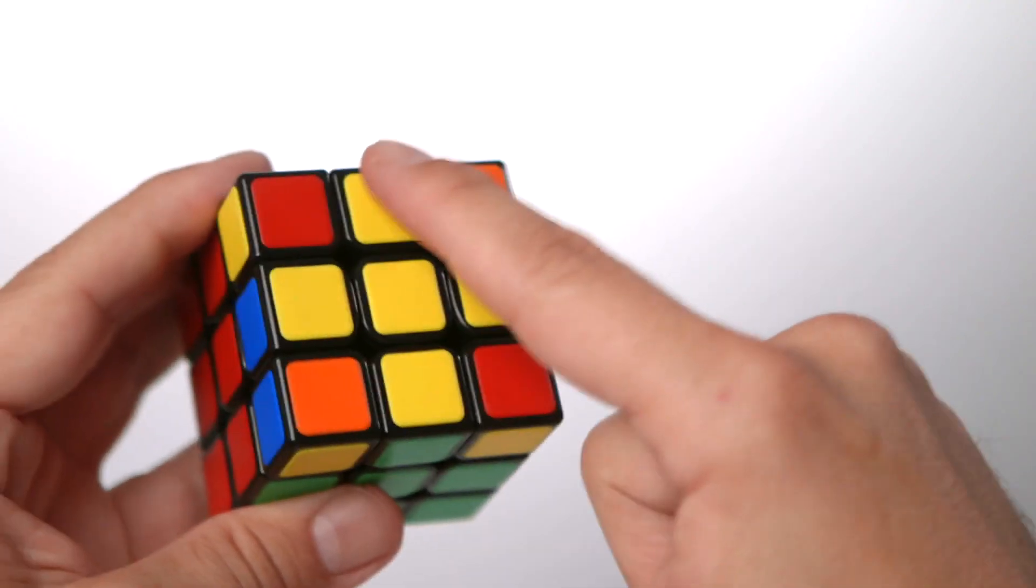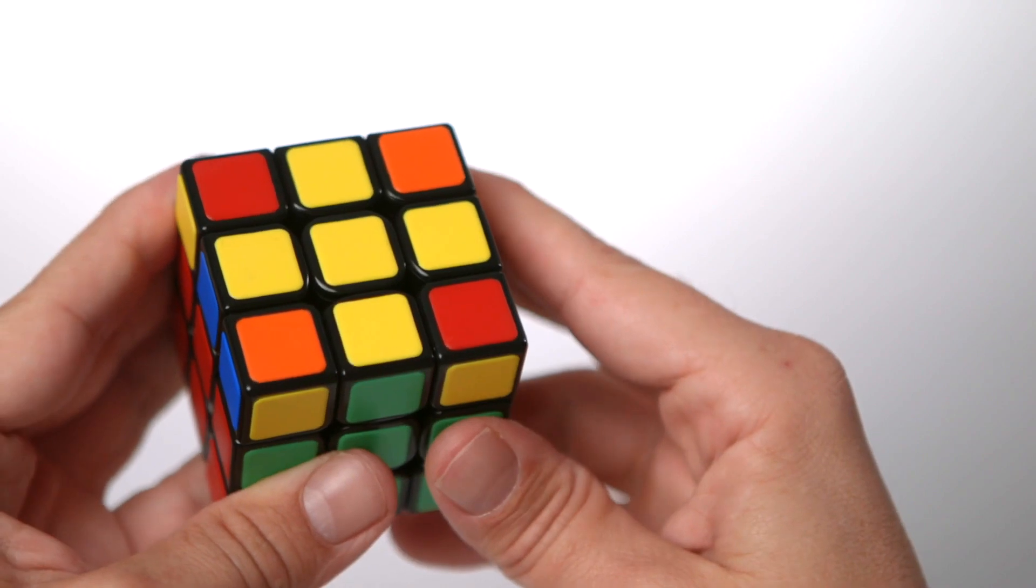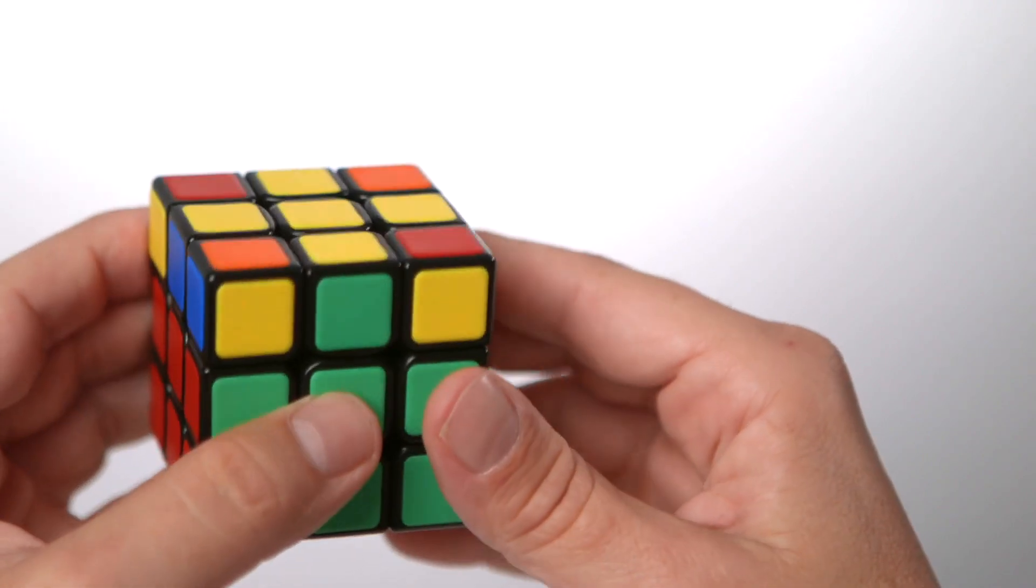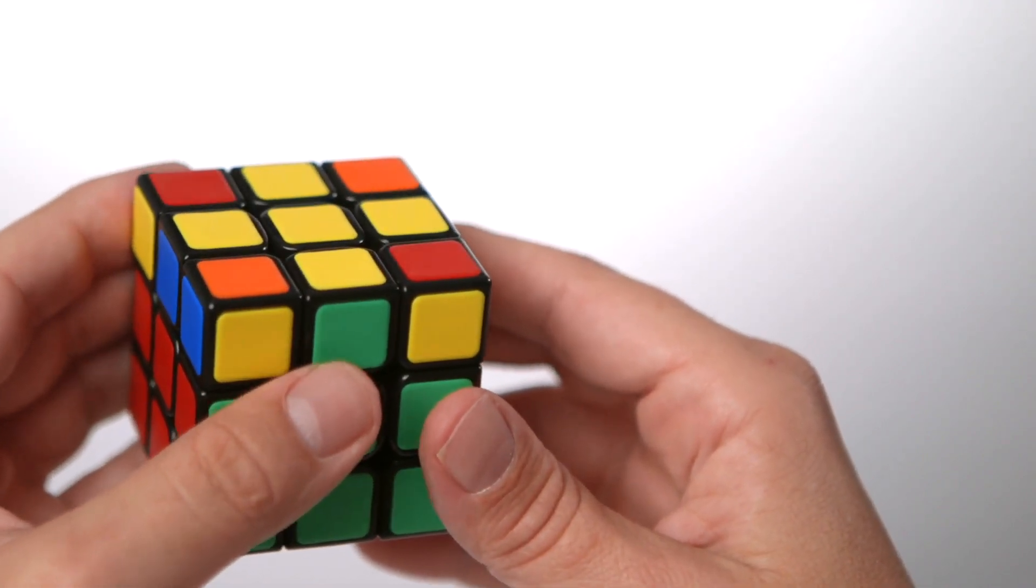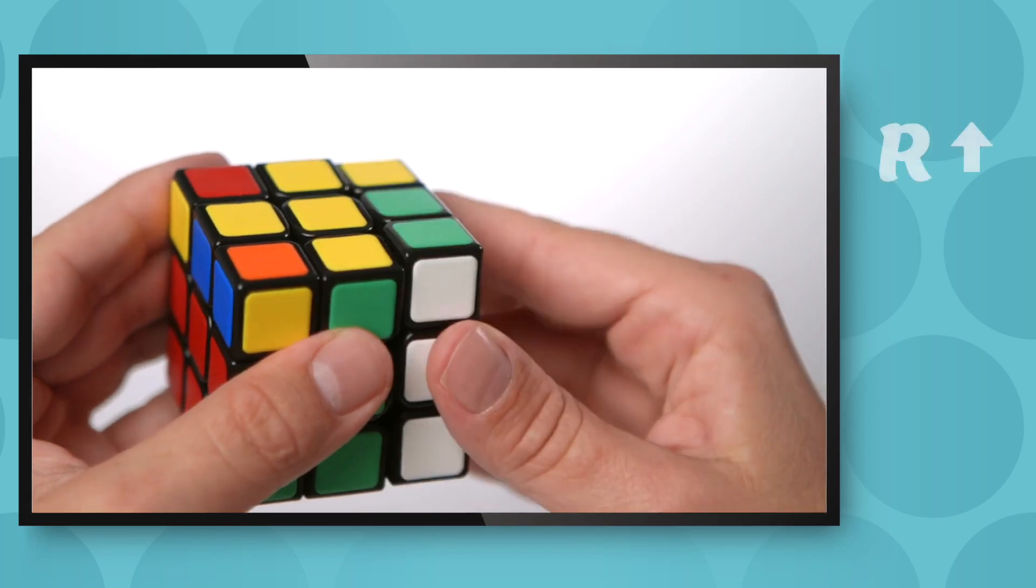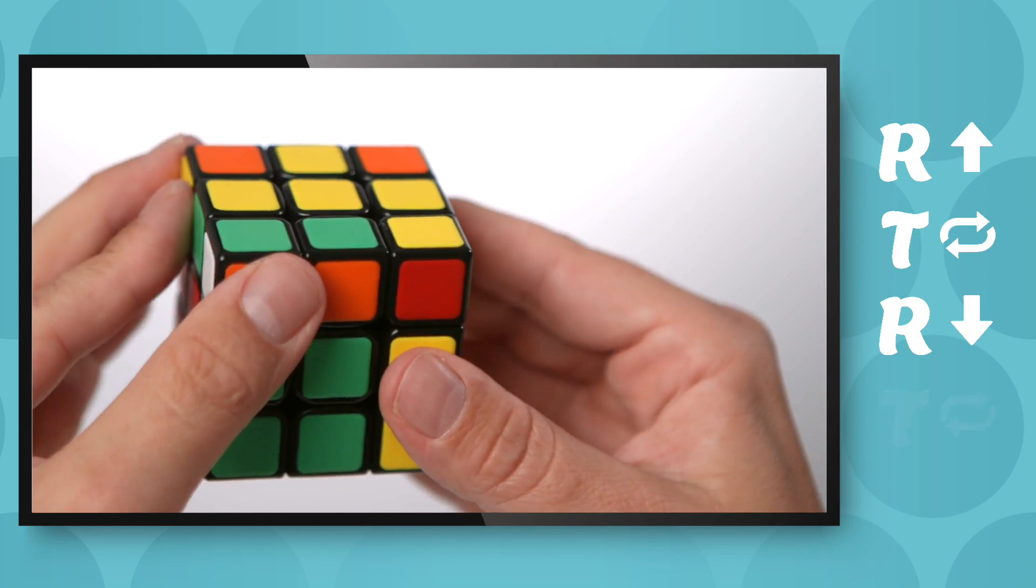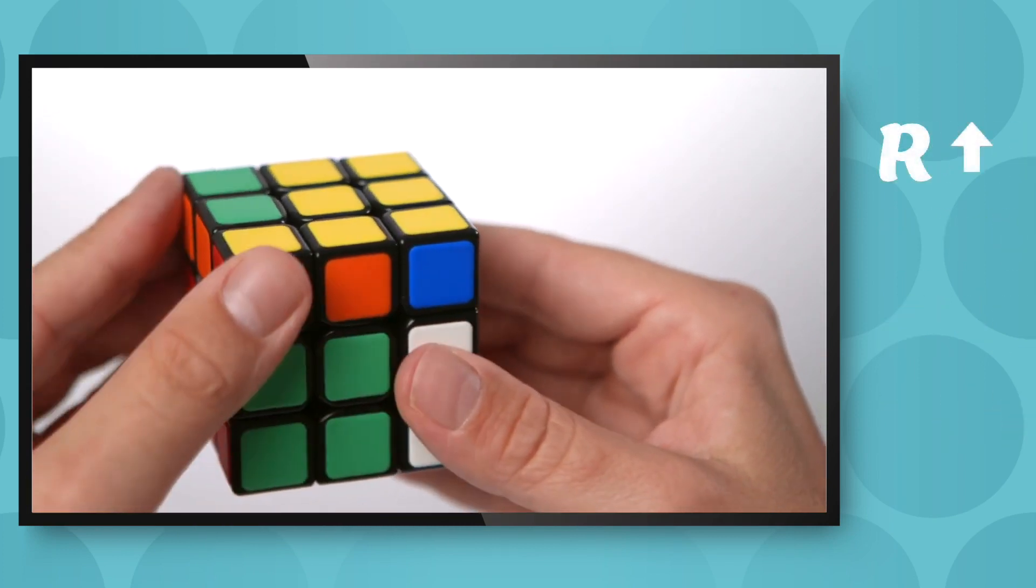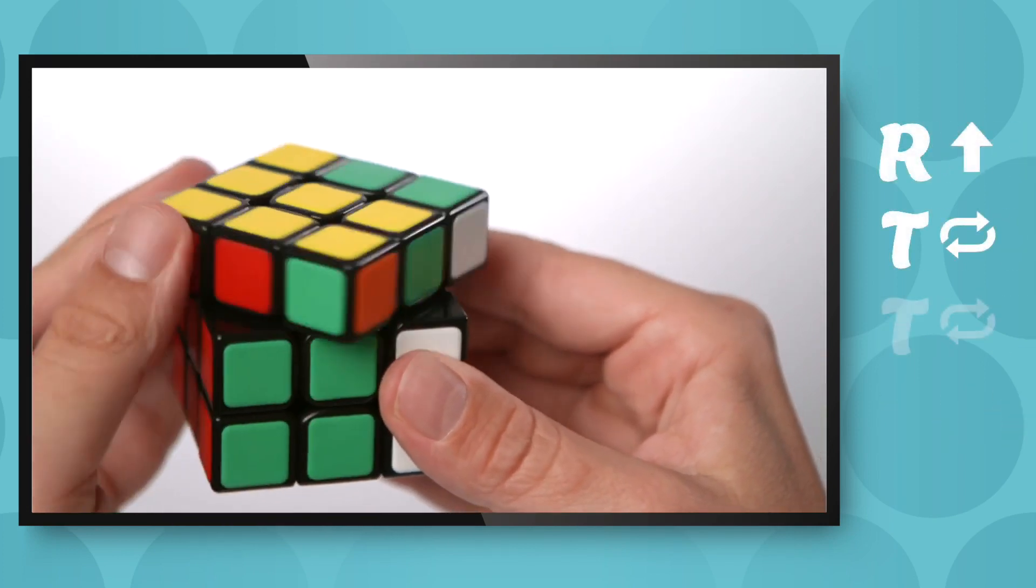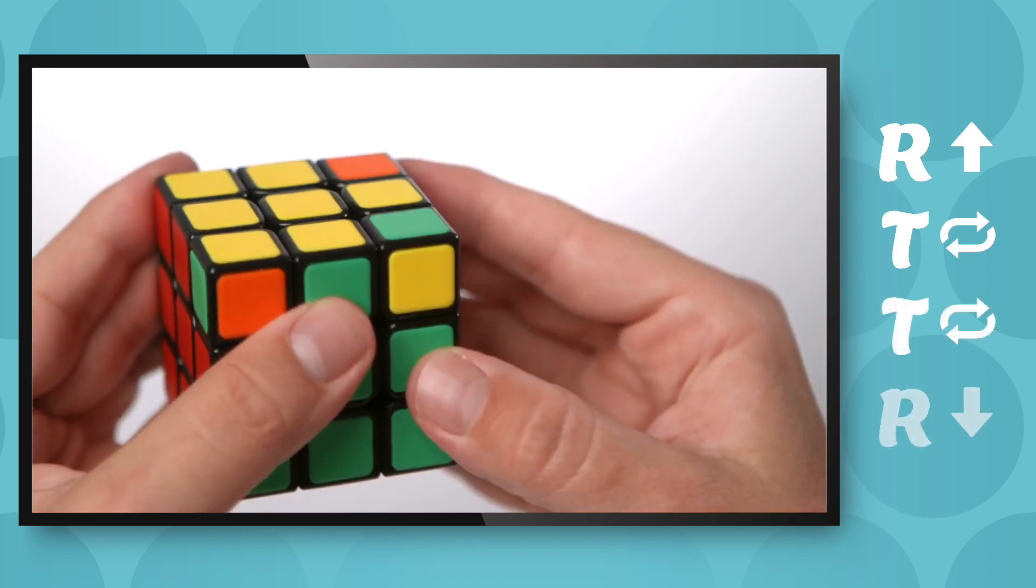Now this has formed a cross again. That's okay. We just keep doing it until we get to the fish. Right up, top clockwise, right down, top clockwise, right up, top clockwise, top clockwise, right down.